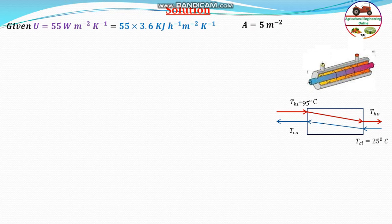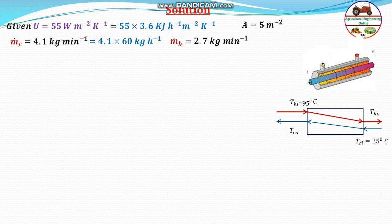The area of heat transfer is 5 square meters. The mass flow rate of cold water is 4.1 kg per minute; converting to kg per hour gives 4.1 × 60 kg per hour. Similarly, the hot water mass flow rate is 2.7 kg per minute, which converts to 2.7 × 60 kg per hour.